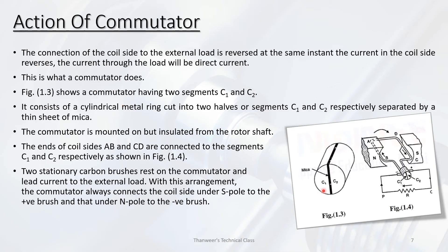The commutator consists of a cylindrical metal ring cut into two halves — segments C1 and C2 — separated by a thin sheet of mica. This commutator is mounted on, but insulated from, the rotor shaft. The ends of coil sides AB and CD are connected to segments C1 and C2 respectively.